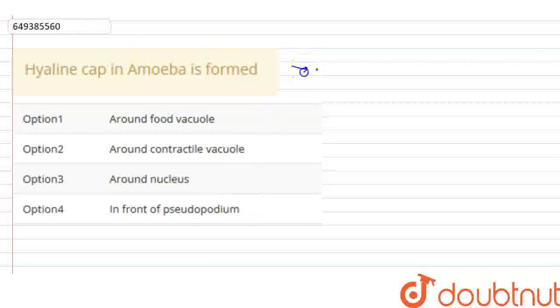What is amoeba? It is a eukaryote and single celled.